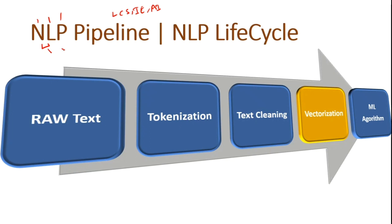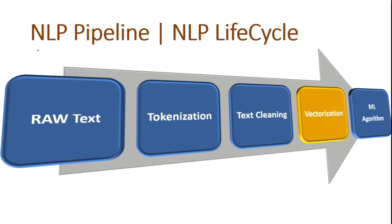Natural language is a language in which humans interact with each other. Natural language processing is related to the interaction between computers and human languages. In NLP, we train computers or machines to process and analyze large amounts of natural language datasets. That data could be in the form of text, speech, audio — anything that is natural language.